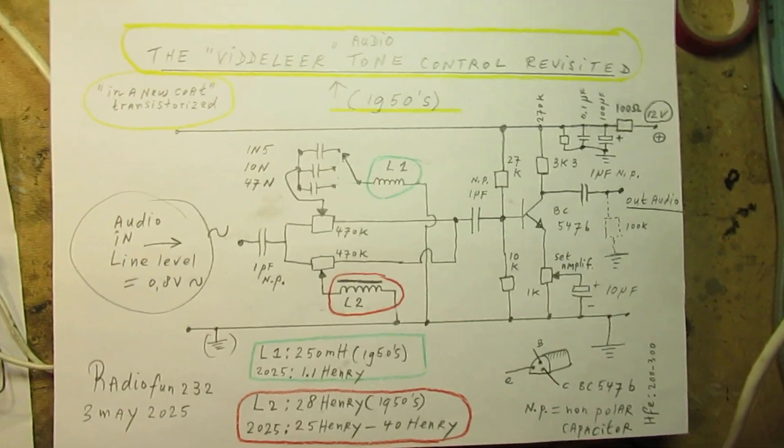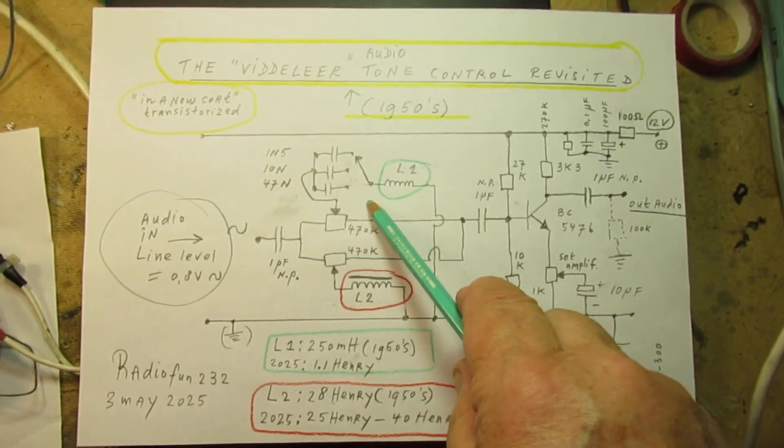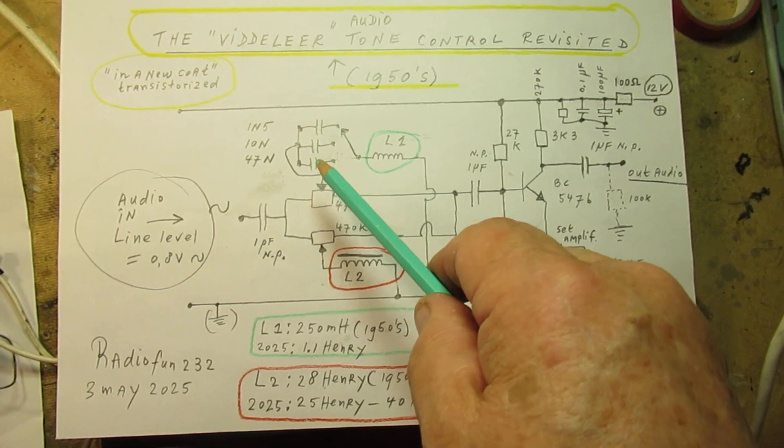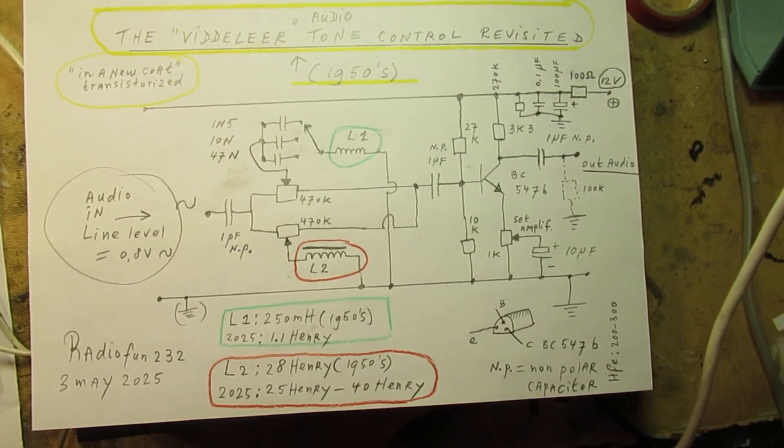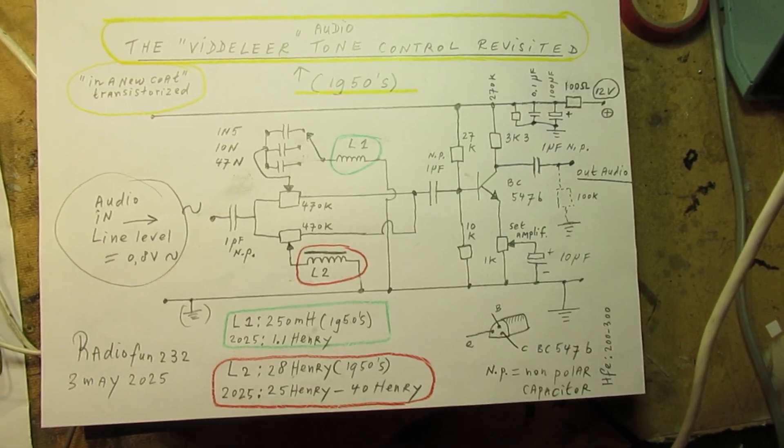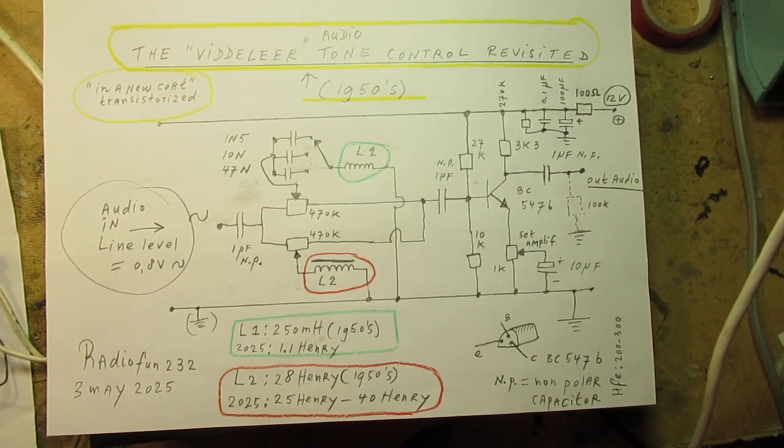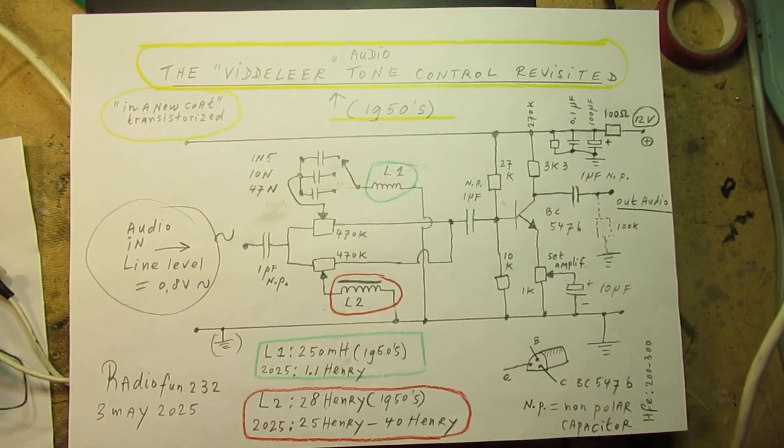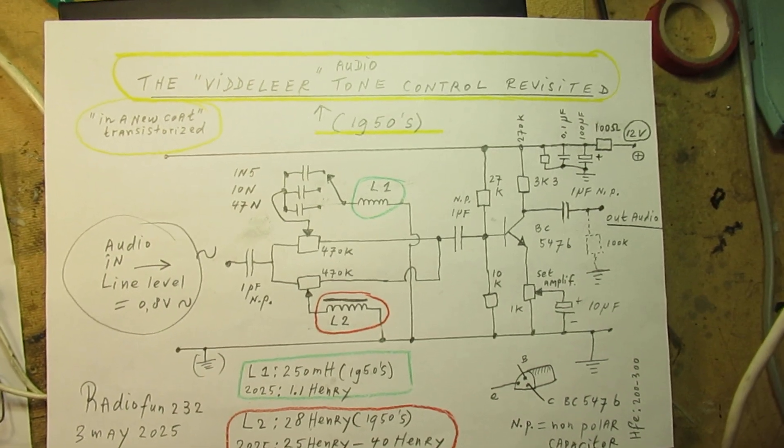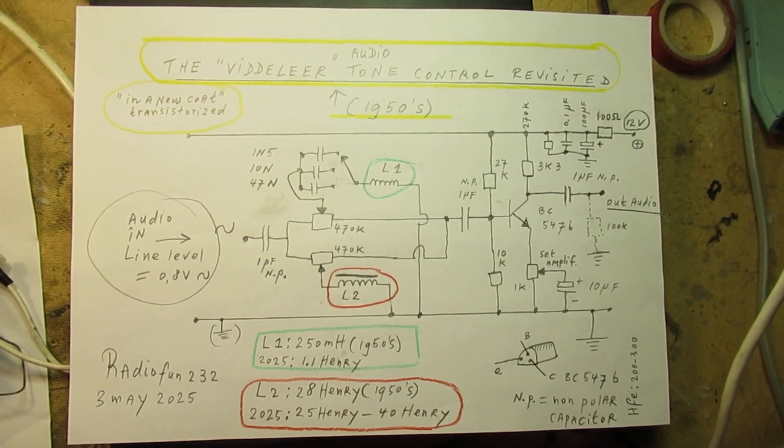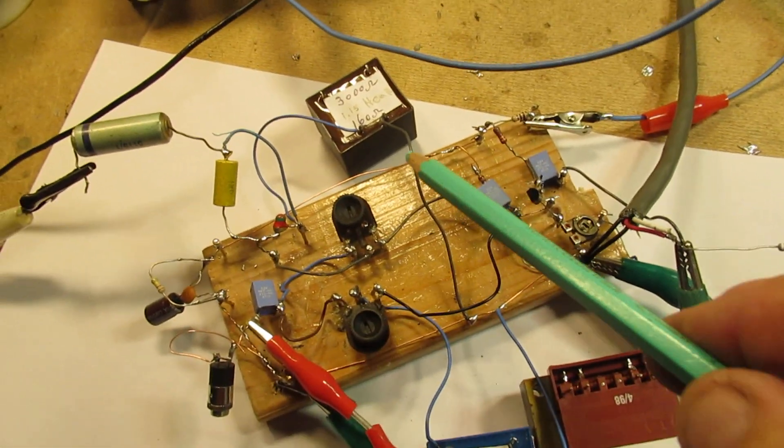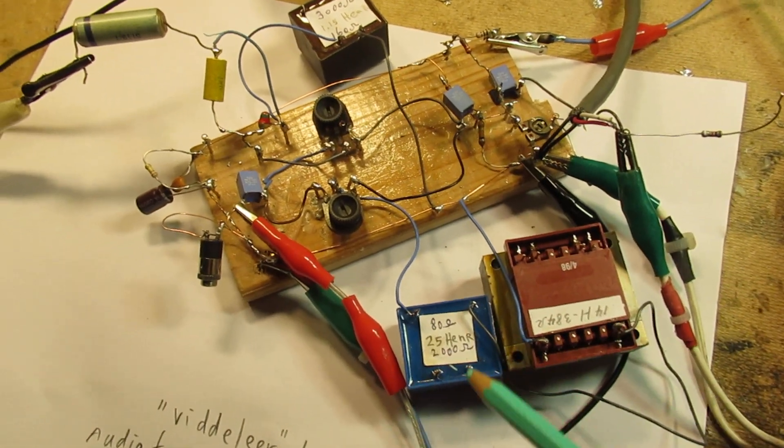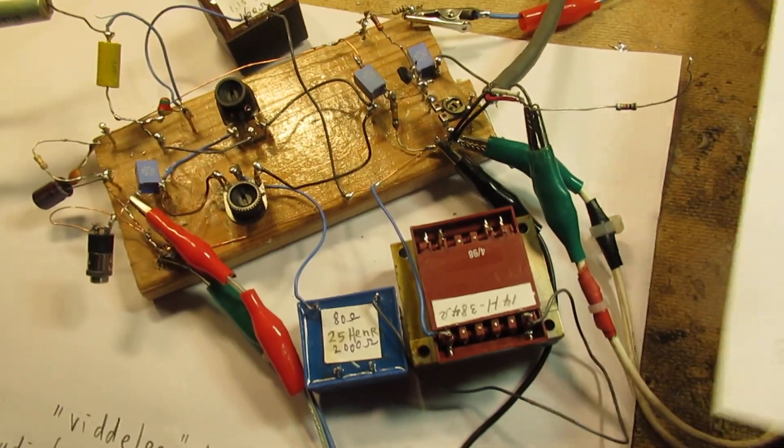So here the schematic again. I have used here a switch. In the original schematic, he used a 1.5 nanofarad capacitor, 1500 picofarad. But I have made this in such a way that I had the maximum influence on the sound. Of course, perhaps it does not match exactly with all the curves in the original article of the 1940s, 1950s. A good idea, by the way, when you want to make it for real, is to put it in a metal box, a steel box, because the coils here have a high inductance and they can pick up hum. Let's listen.